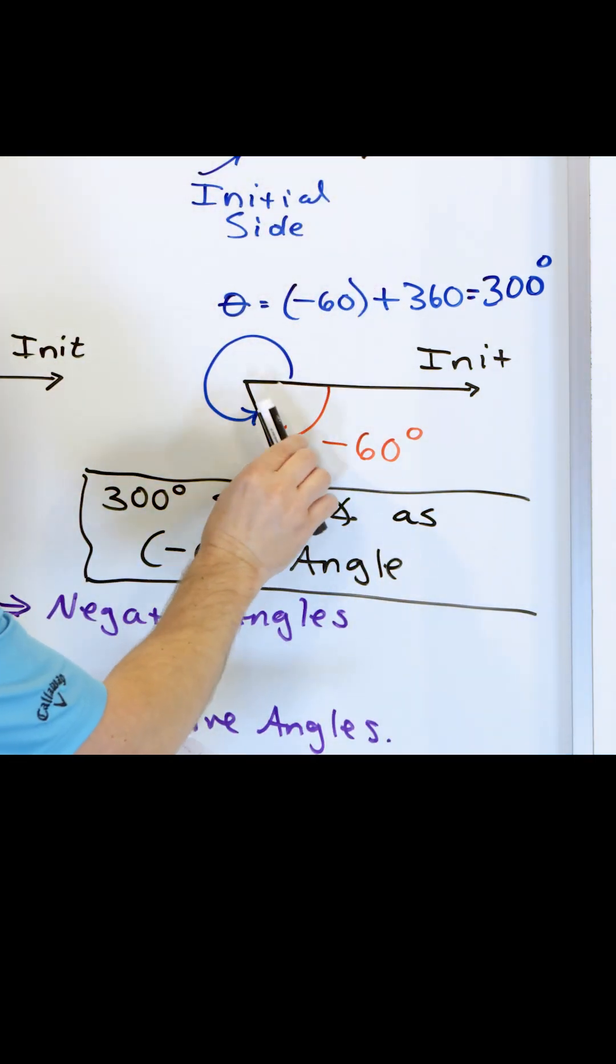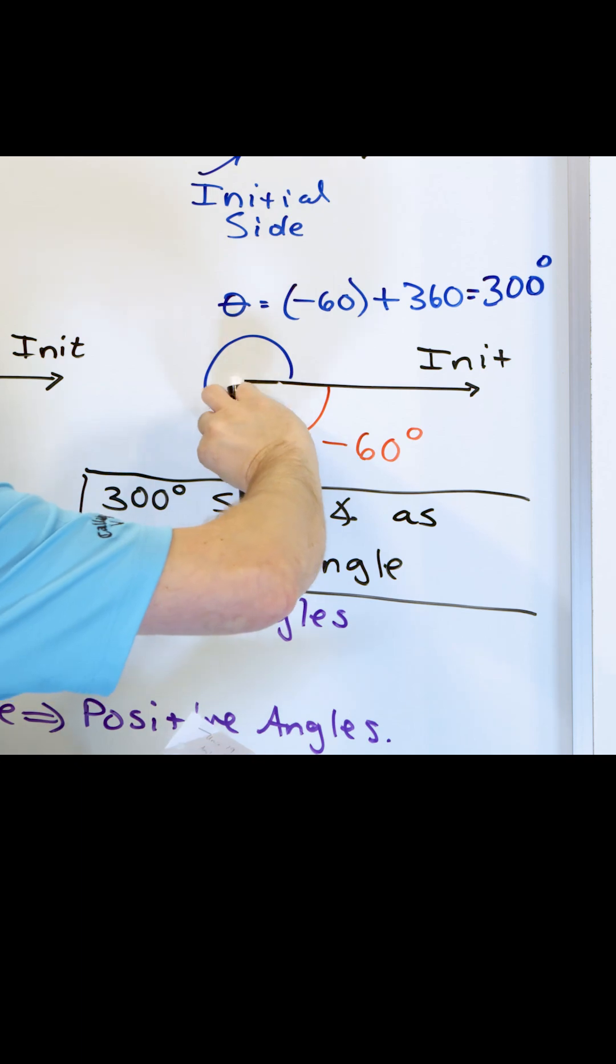So this angle also can be negative 60 degrees, it could be 300 degrees, or if I add 360 again, it could be 660 degrees.